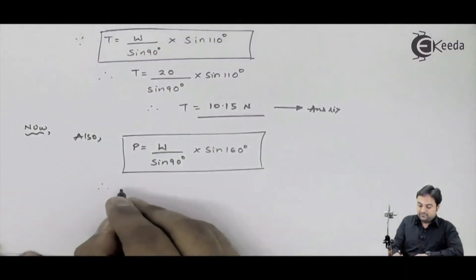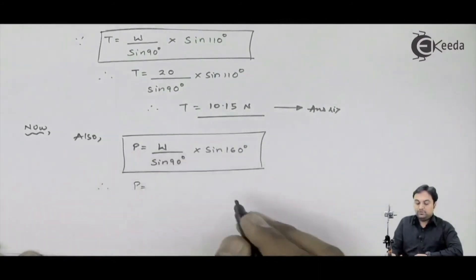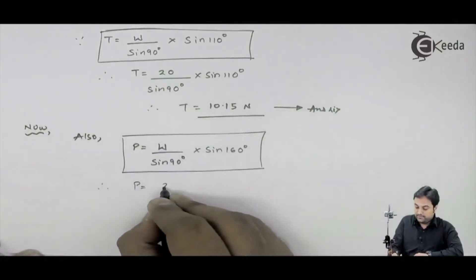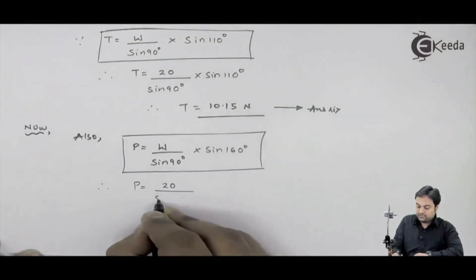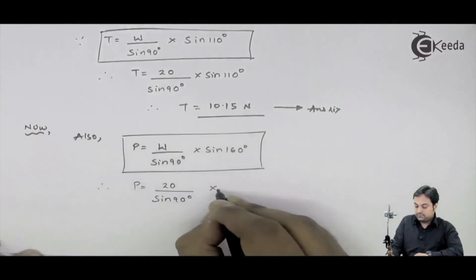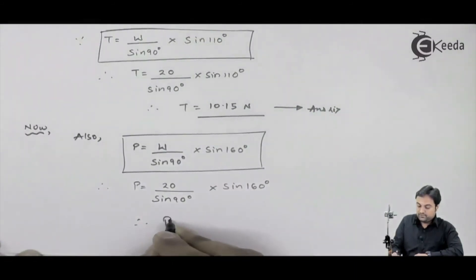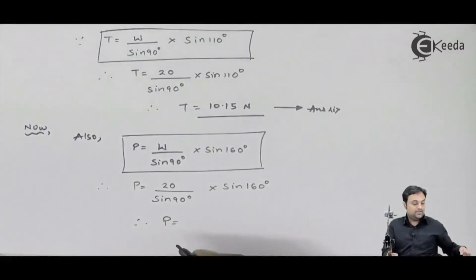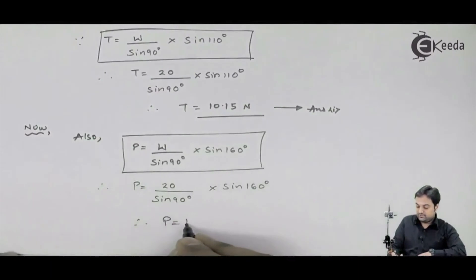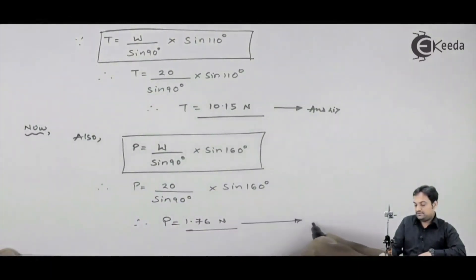If I say that therefore capital P is equal to W, the value of W is given as 20 upon sin 90 into sin 160. So if I calculate the answer, I will be getting capital P as 1.76 Newtons. That is my second answer.